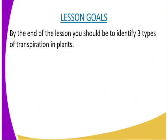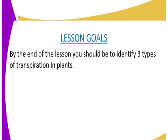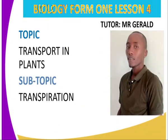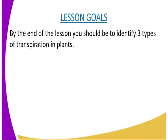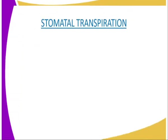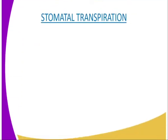So let us now define what transpiration is. Transpiration is a process through which plants lose water in the form of water vapour to the atmosphere. We have got around three forms of transpiration.